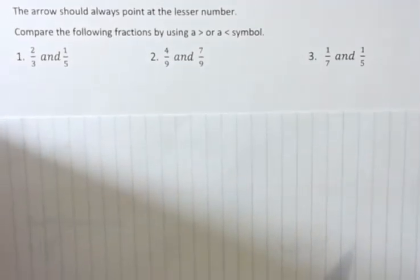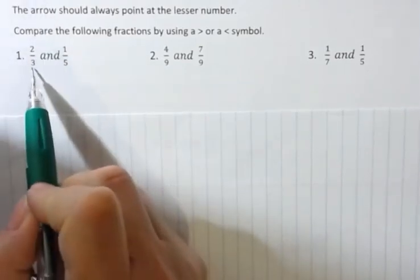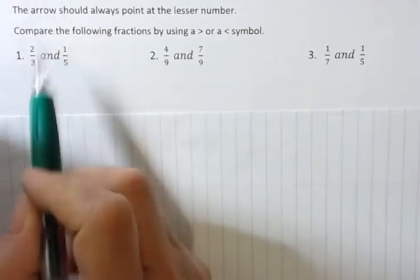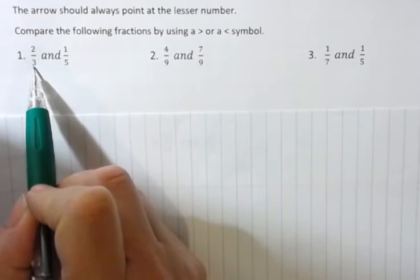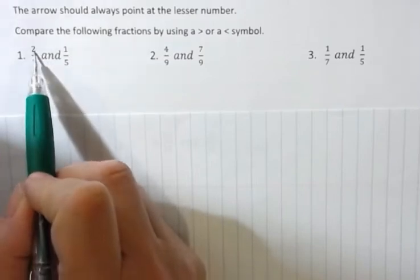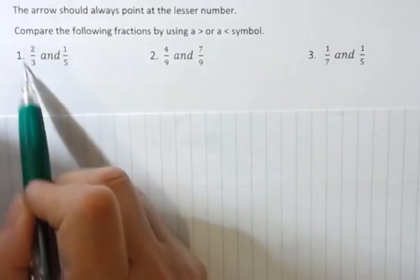Sometimes you can compare fractions just by looking at them and thinking about it a second. Two-thirds, I'm only missing one-third here. What's half of a third? Half of a third is one and a half. Two is more than half, so this is a number that's greater than half.